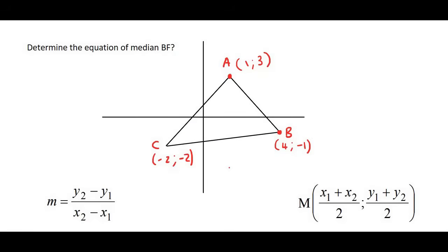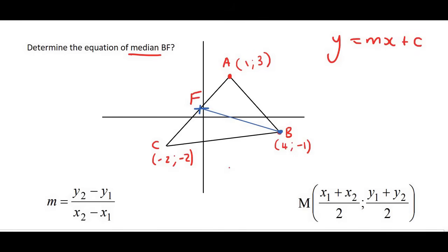In our last example we are going to determine the equation of median BF. So it starts at point B and it would hit the opposite side exactly in half — it would hit AC at the midpoint of AC, so that would probably be somewhere over here. Now a median is a straight line, so that means we would need to use y = mx + c. However, we do not know the coordinates of point F.